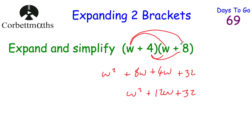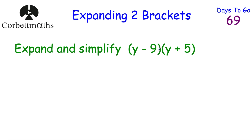Just to recap: to expand two brackets, you multiply all of the terms in the second bracket by each of the terms in the first bracket and then simplify. So we did w lots of (w + 8) and four lots of (w + 8) and then collected our like terms.